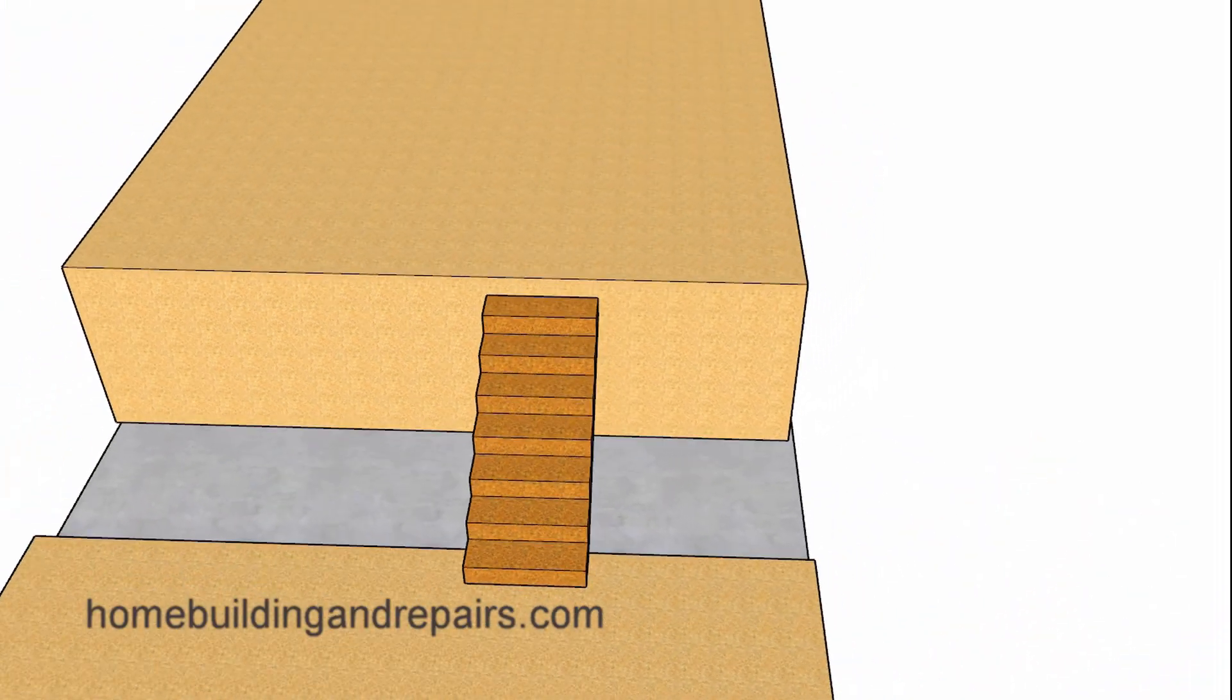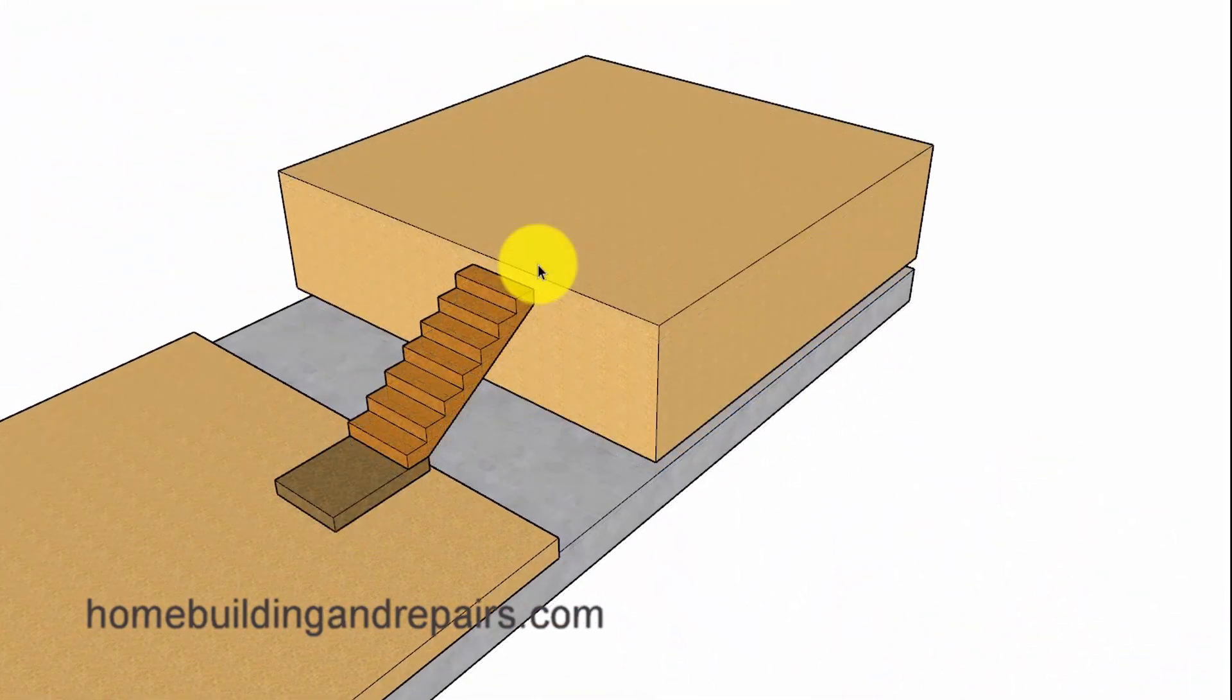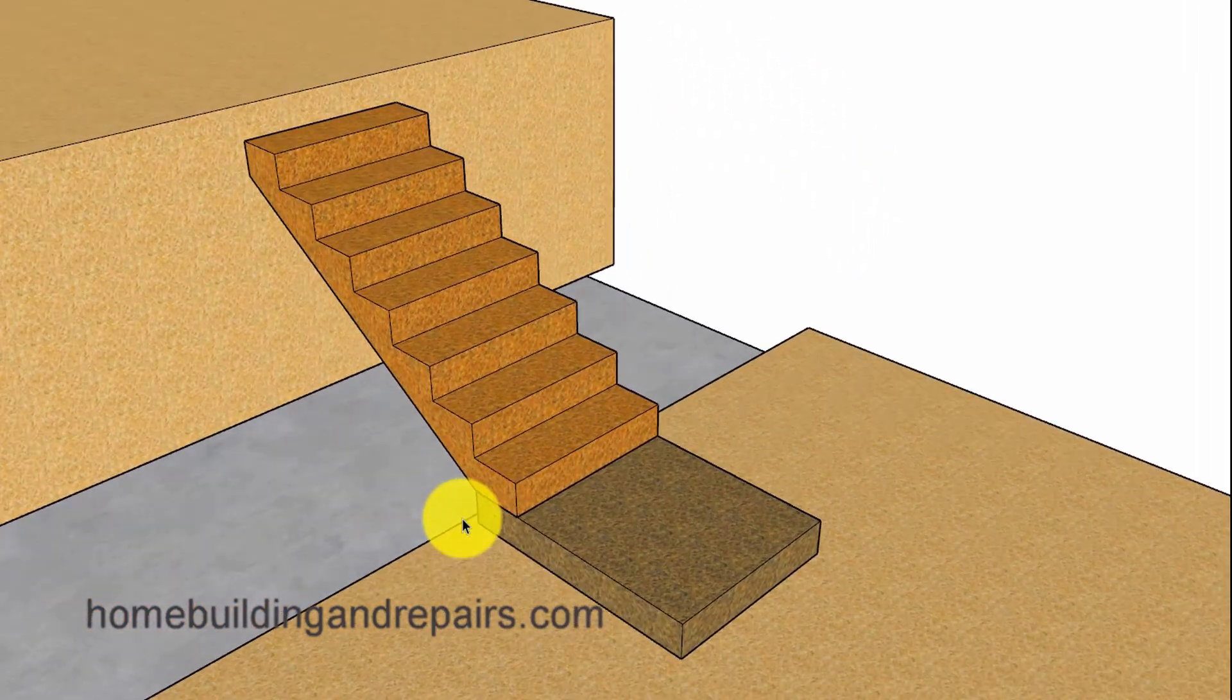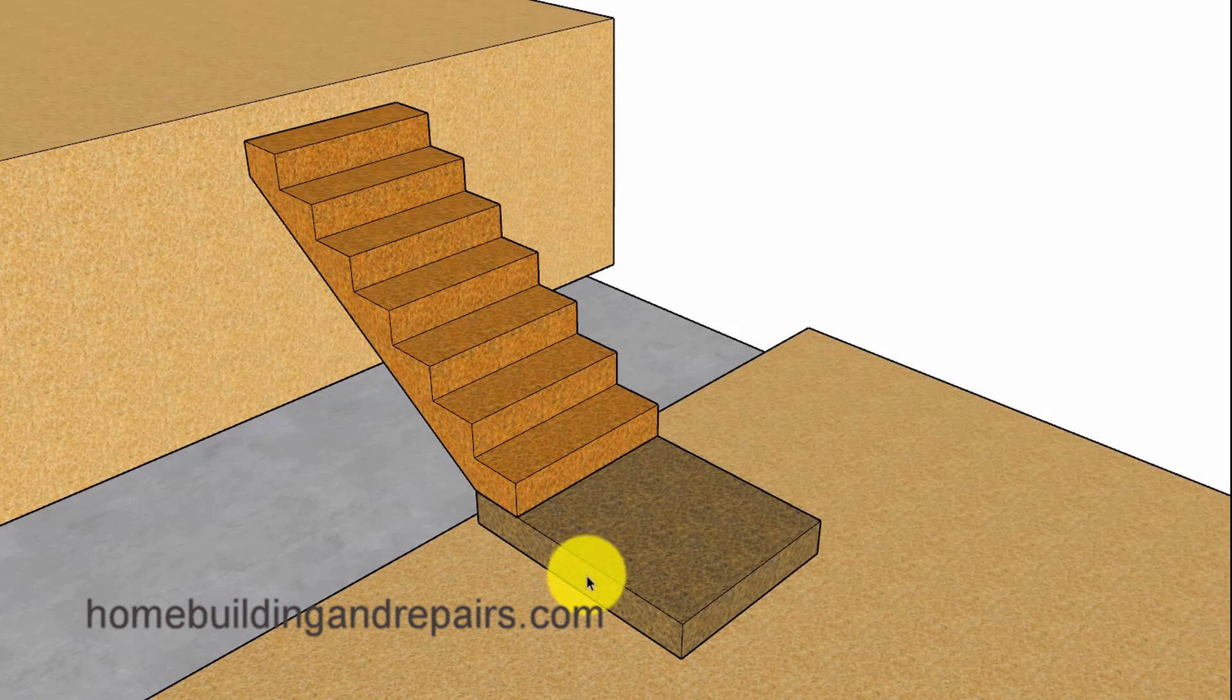An example of that would be if you had a landing at the bottom or top of the stairway. Now, here's the problem I ran into when I was building stairs, and that was the fact that it wasn't difficult to cut the stair stringers to provide the same riser height for each step in the stairway. However, that wasn't always going to be the case with the landing.